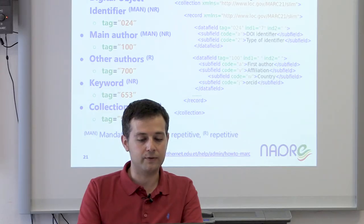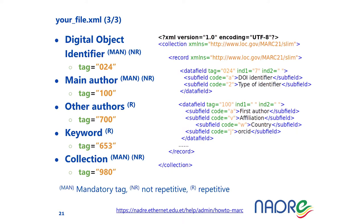The 100 tag represents the main author and is also mandatory and non-repetitive — so only one main author per record. In subfield A you specify the author name, subfield B the affiliation, subfield W the country, and subfield J the ORCID ID. To specify additional authors, use the 700 tag, which is optional and repeatable — one per each additional author — with the same subfield structure as the 100 tag.